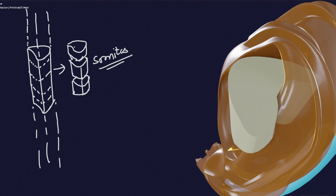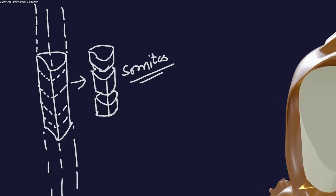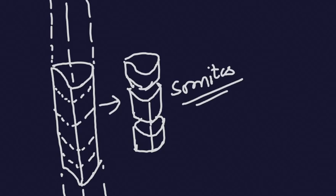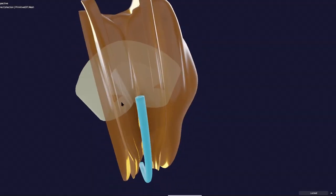Within these somites, the fate of the cells is determined. Some cells will be destined to form muscles — that is the myotome. Some will become destined to form the sclerotome, which forms the skeleton and tendinous parts. And some will form the precursor of the dermis — the dermatome. So dermatome, myotome, and sclerotome are formed from the somites.